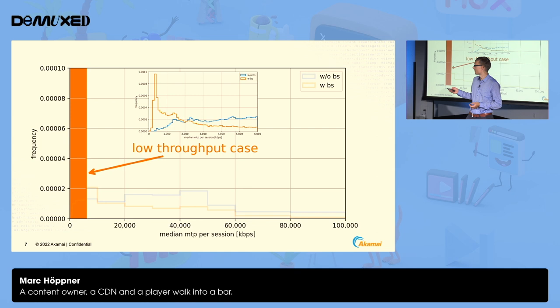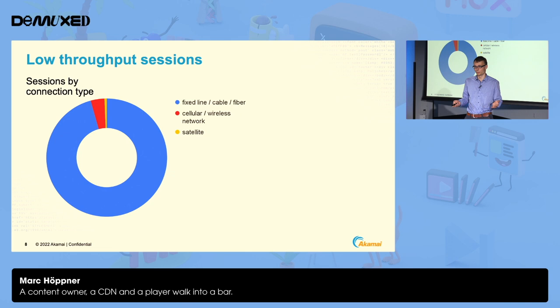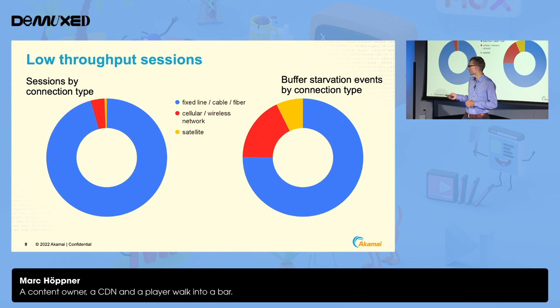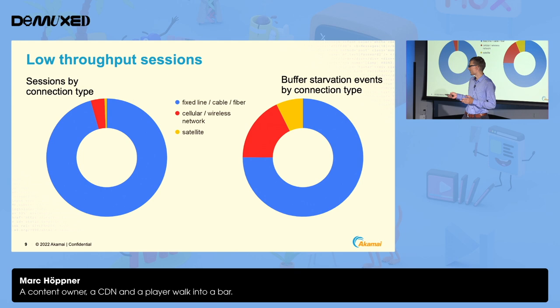In the low throughput case there's a high peak at very low throughput. When we split those sessions by network type, most are on fixed-line. However, looking specifically at sessions with a buffer starvation event, the distribution changes — we see a much stronger contribution from cellular, wireless, and satellite networks. Furthermore, looking at those individual sessions, throughput and latency fluctuate much more in cellular and wireless networks than in fixed-line and cable networks.